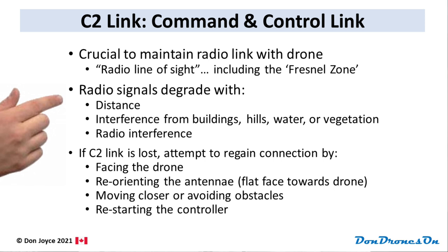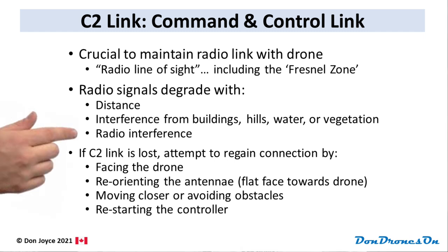Radio signals degrade with distance, interference from buildings, hills, water, and vegetation, and also interference from other radio sources like Wi-Fi signals, cell phone towers, electromagnetic noise from power lines and transformers — all sorts of things. The OcuSync system actually monitors radio signal quality and actively switches channels to optimize the connection. That's why it works so well.